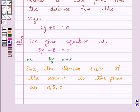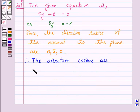Therefore, the direction cosines are 0 over root 5 square which is 0, 5 over root 5 square,